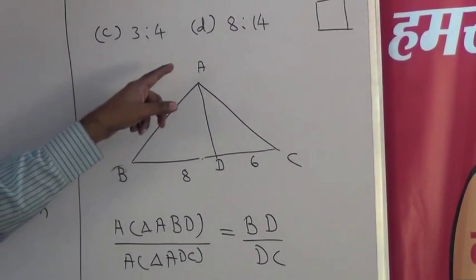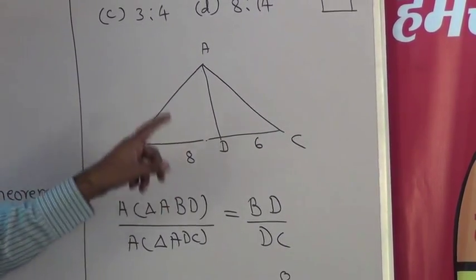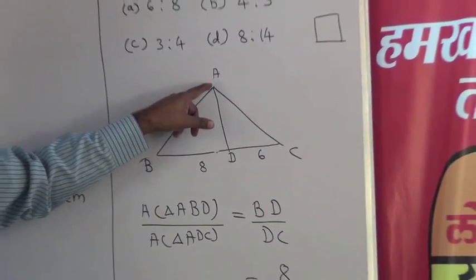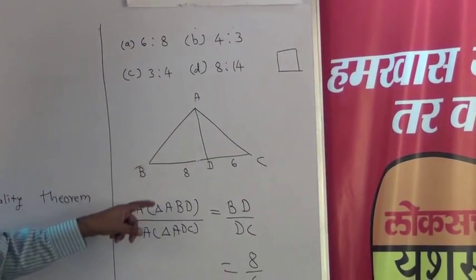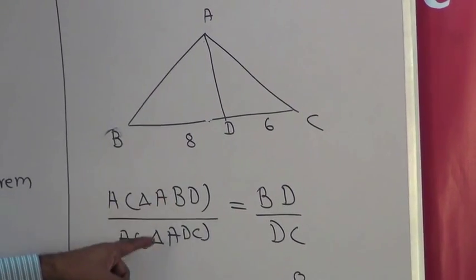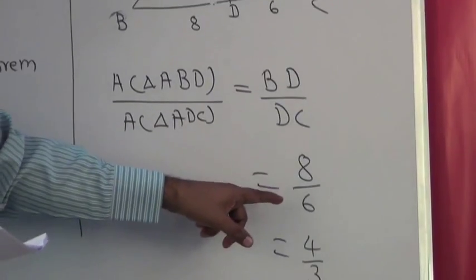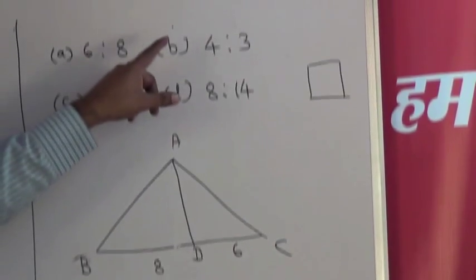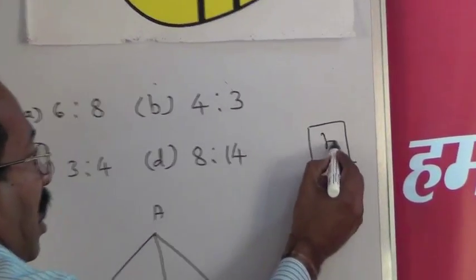From the given condition, the diagram shows triangle ABC with BD = 8 cm and DC = 6 cm. Since vertex A is the same, the height of both triangles is the same, so the area depends on the base. Area of triangle ABD to area of triangle ADC equals BD upon DC, which is 8 upon 6, simplified to 4 is to 3. Alternative B is the correct answer.